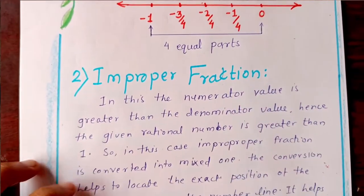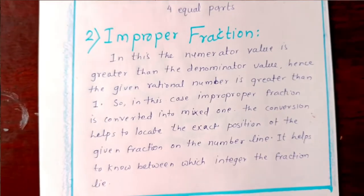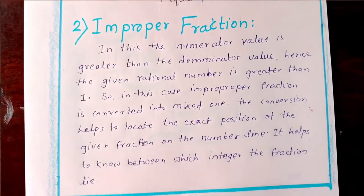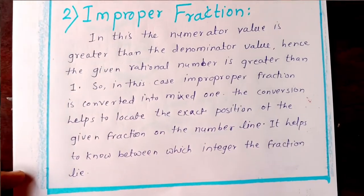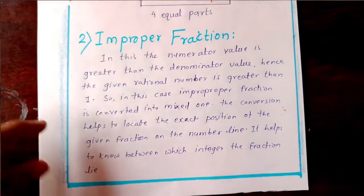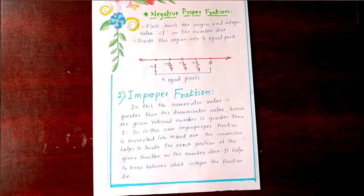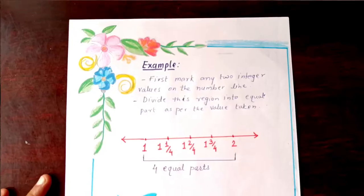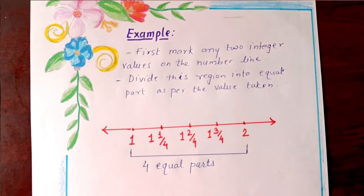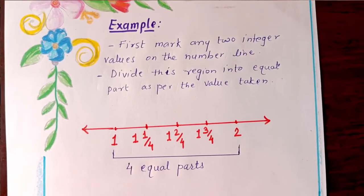The second type is improper fraction — representation of improper fraction on number line. Here is the description. Let's see the next page. Our next page is the example of improper fraction on number line.